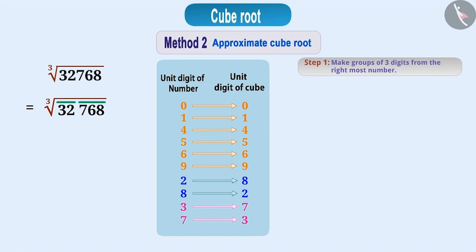If the unit digit of the number is 2, the unit digit of its cube is 8. And if the unit digit of the number is 8, then the unit digit of its cube is 2. Similarly, if the unit digit of the number is 3, then the unit digit of its cube is 7. And if the unit digit of the number is 7, the unit digit of its cube is 3. So tell me, the last digit of the number is 8, so what will be the unit digit of its cube root? Absolutely right!